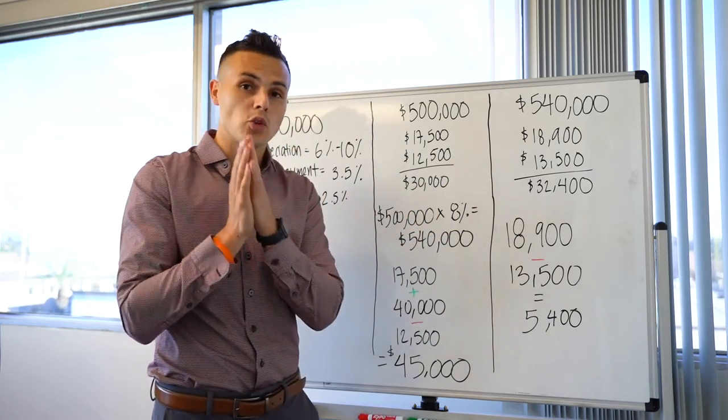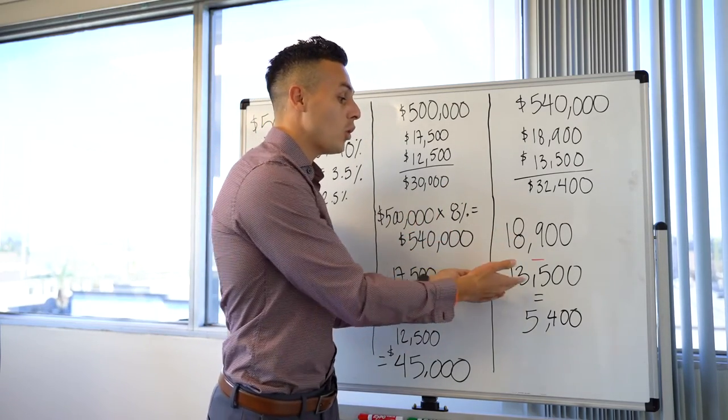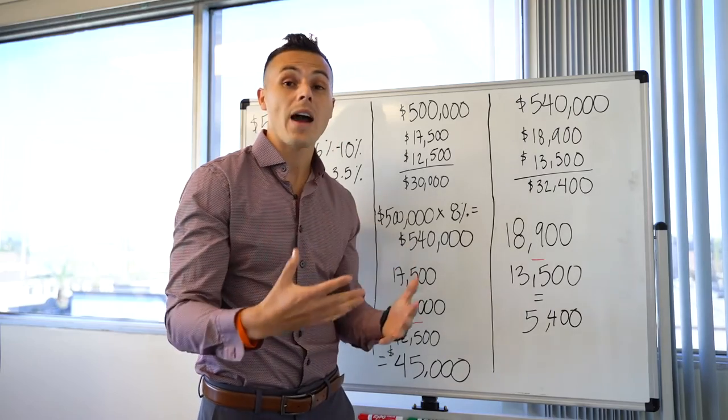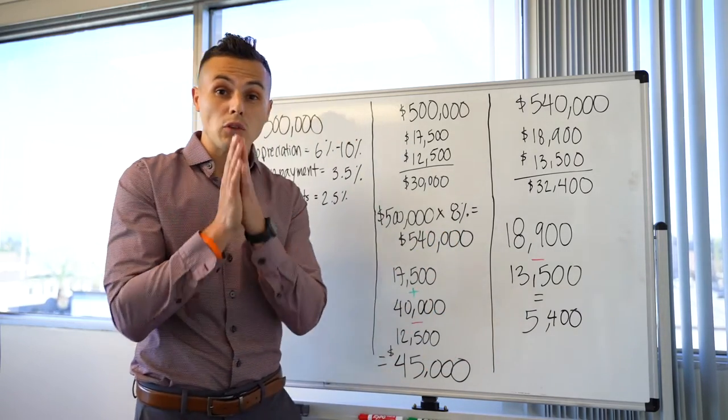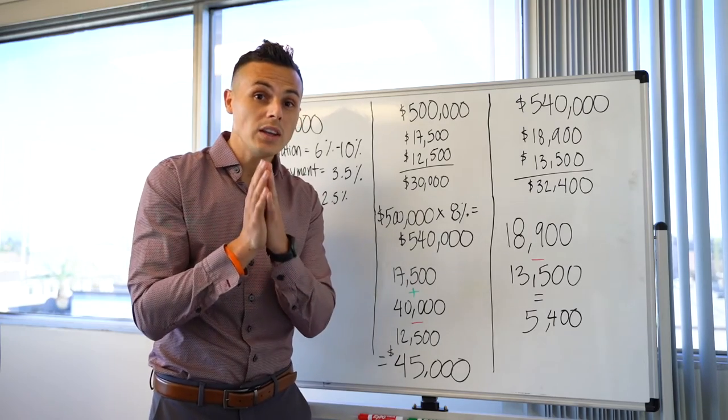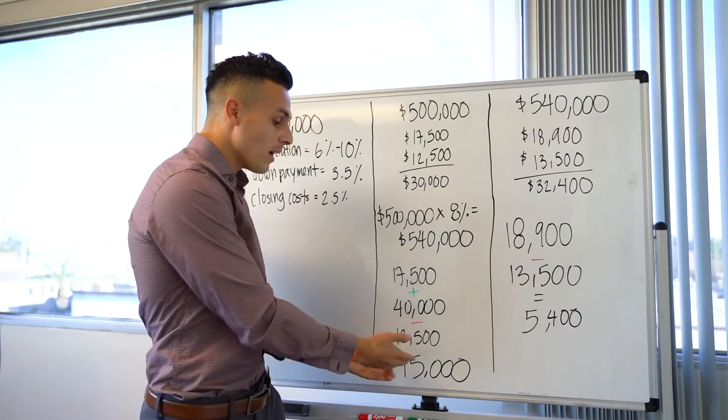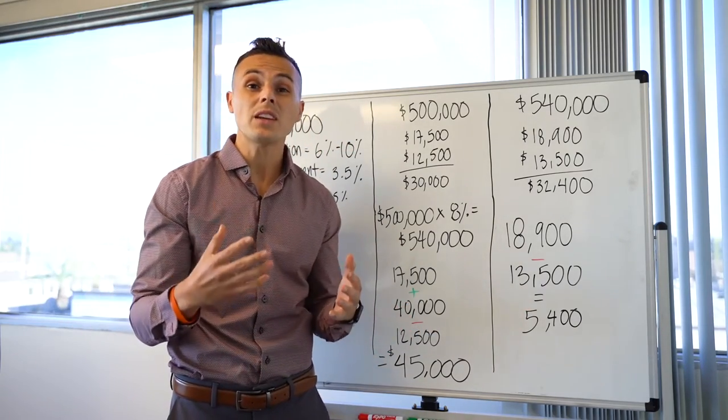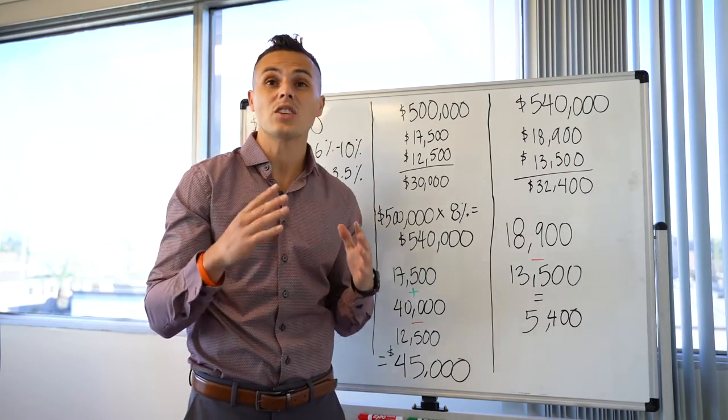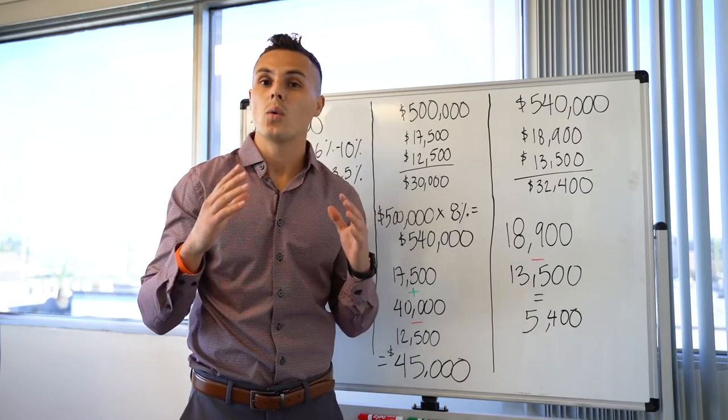Now, if you subtract your down payment by your closing costs, that leaves you $5,400. So if you just wait one year, subtract $45,000 by $5,400, that's going to cost you about $40,000 in net worth.